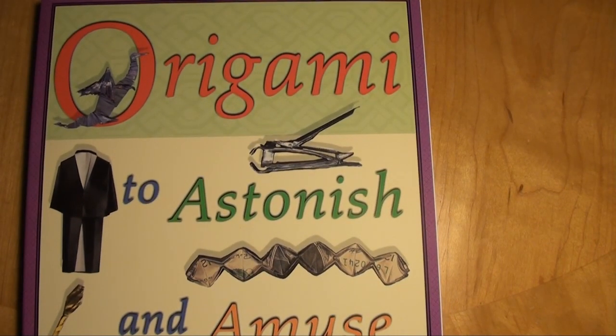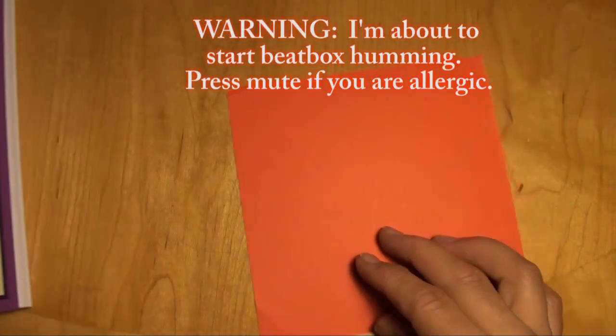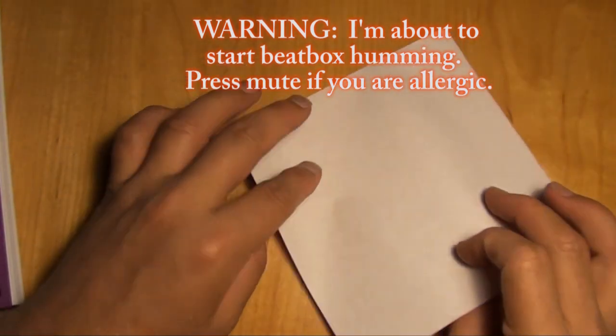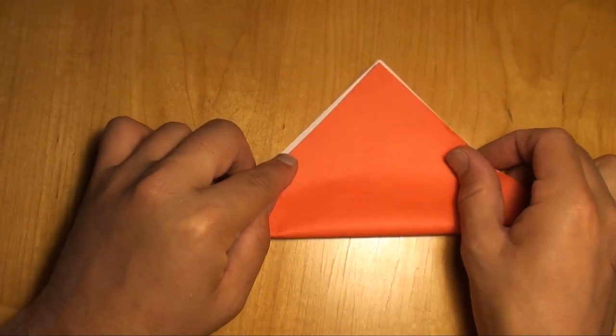This is a model that I designed and published in my first book, Origami to Astonish and Amuse. And it begins with a 6-inch piece of paper. You know, 6 is a good size. And fold it diagonally in half.